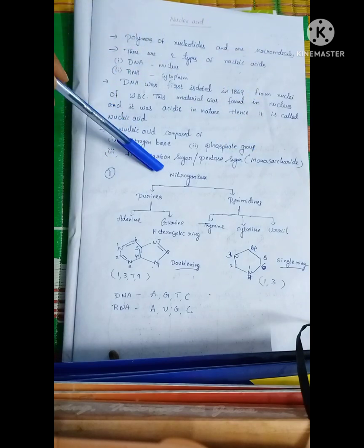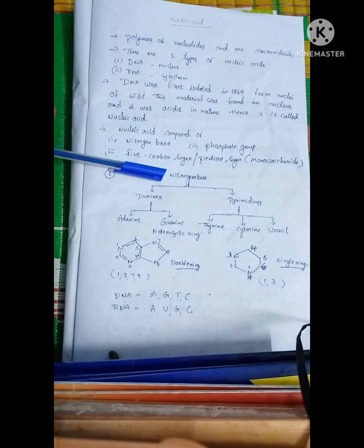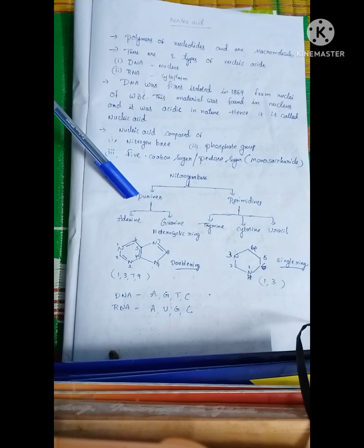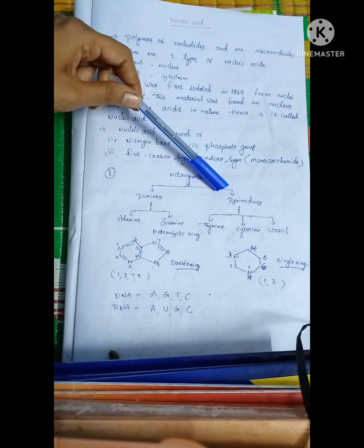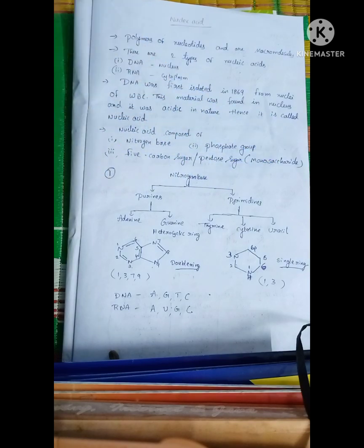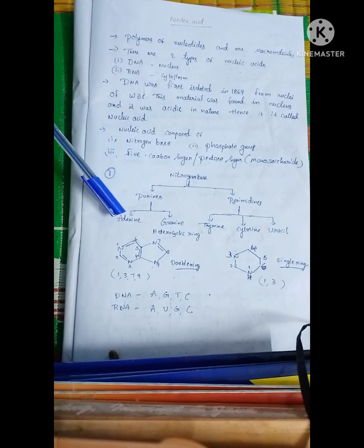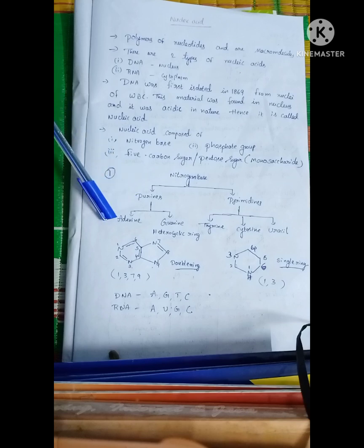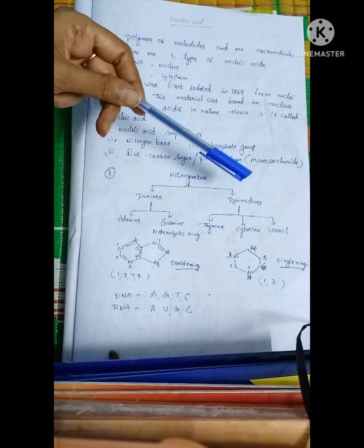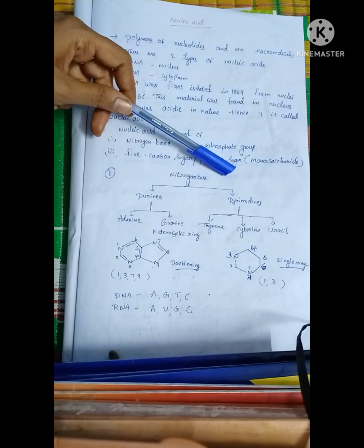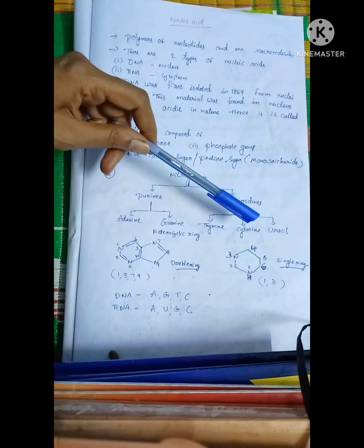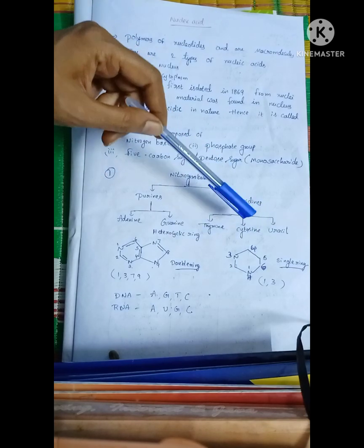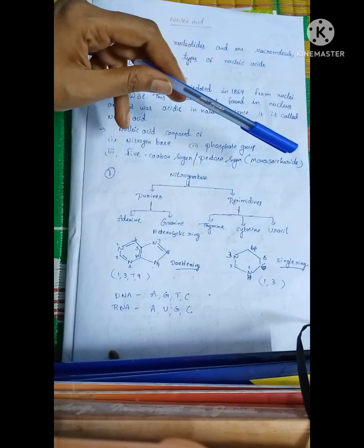Nitrogen bases are of two types: purines and pyrimidines. Purines are two types: adenine and guanine. Pyrimidines are three types: thymine, cytosine, and uracil.